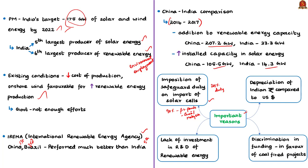The depreciation of the Indian rupee compared with the US dollar has also lessened some of the advantages offered by declining costs. Depreciation means the reduction in the value of a currency when compared with another — for example, if one dollar equals 60 rupees today and becomes 62 rupees tomorrow, that is a depreciation of two rupees. Even if the price of cells in dollars comes down, the depreciation of the rupee forces Indians to pay more rupees for the same dollar amount. Another reason is that India is not investing much on research and development of renewable energy sources.